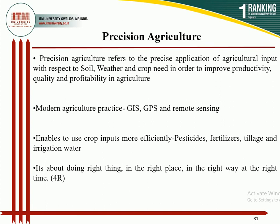Commercial as well as horticultural crops produced there have a scope for precision farming. But most parts of India have farmers with very small land holdings. The basic concept behind studying precision agriculture is how to make farmers aware of using this type of technology even though they have smaller land holdings. Precision agriculture includes precise application of agricultural inputs with respect to soil, weather, and crop need in order to improve productivity, quality, and profitability.